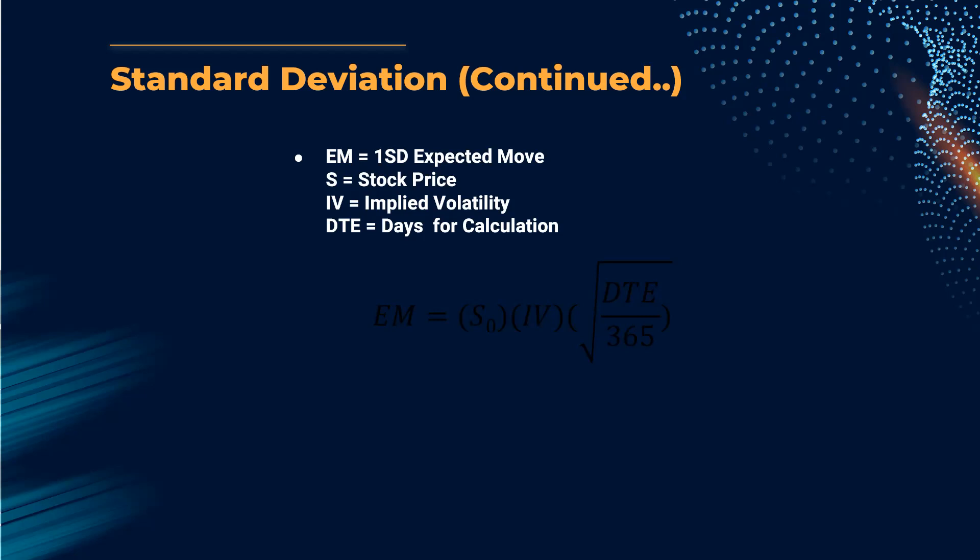The expected price move formula is: EM = S₀ × IV × √(DTE / 365). We use 365 because we are working with annual volatility but forecasting weekly market levels, so we divide by 365.